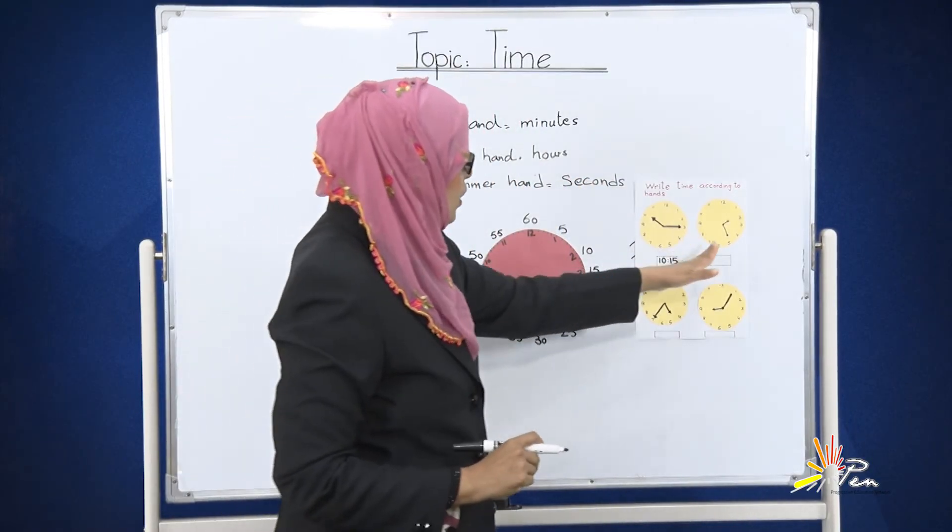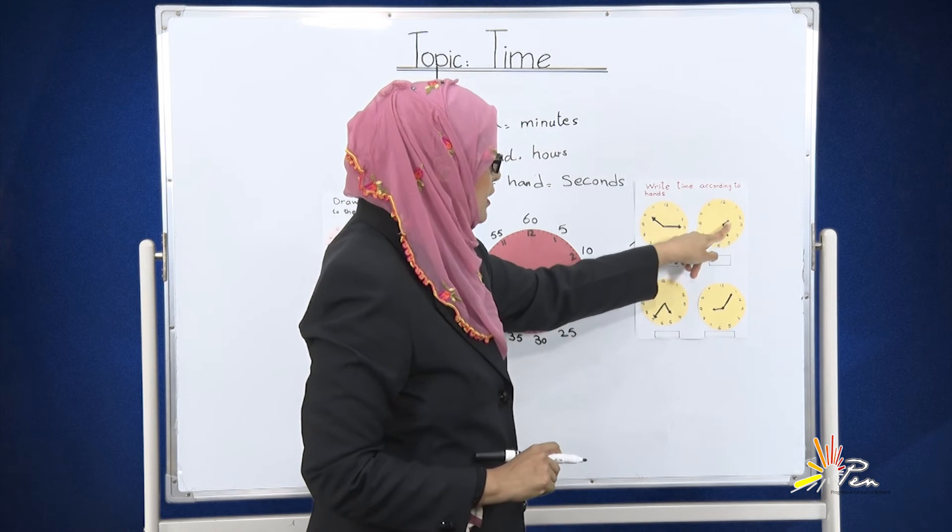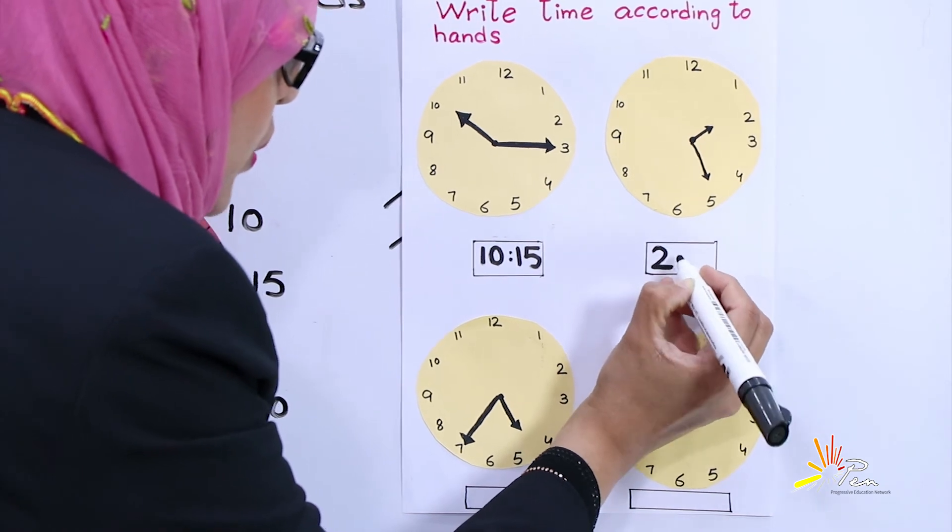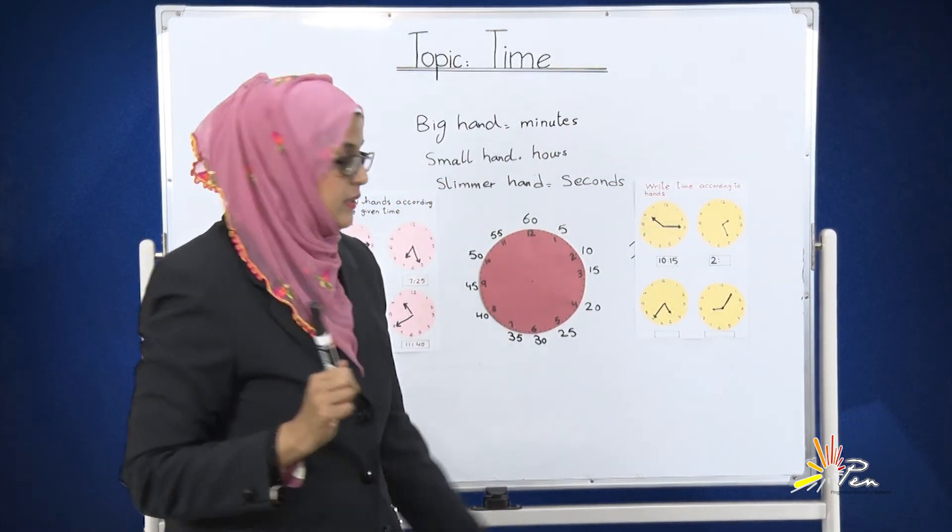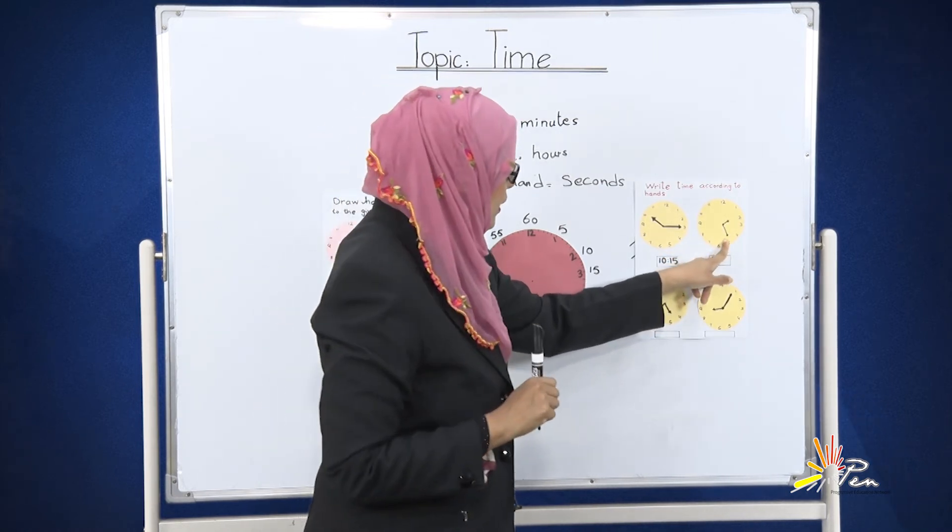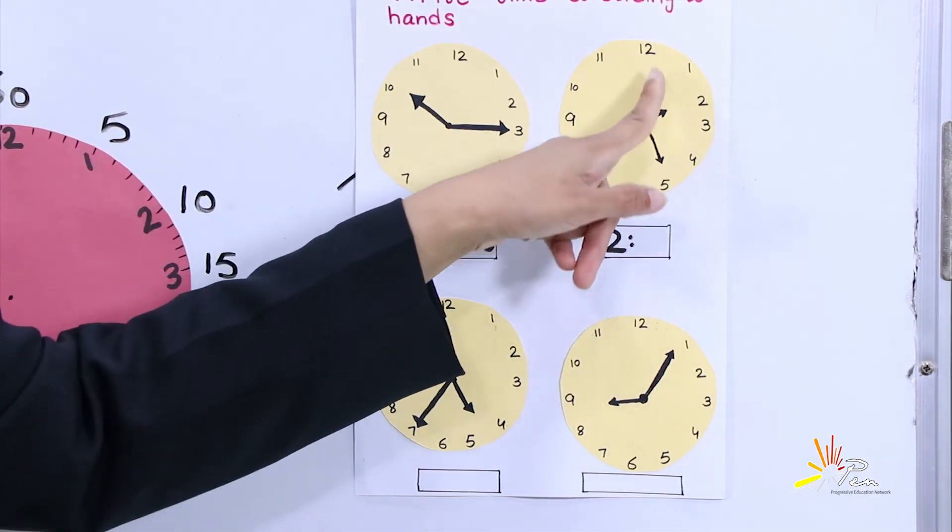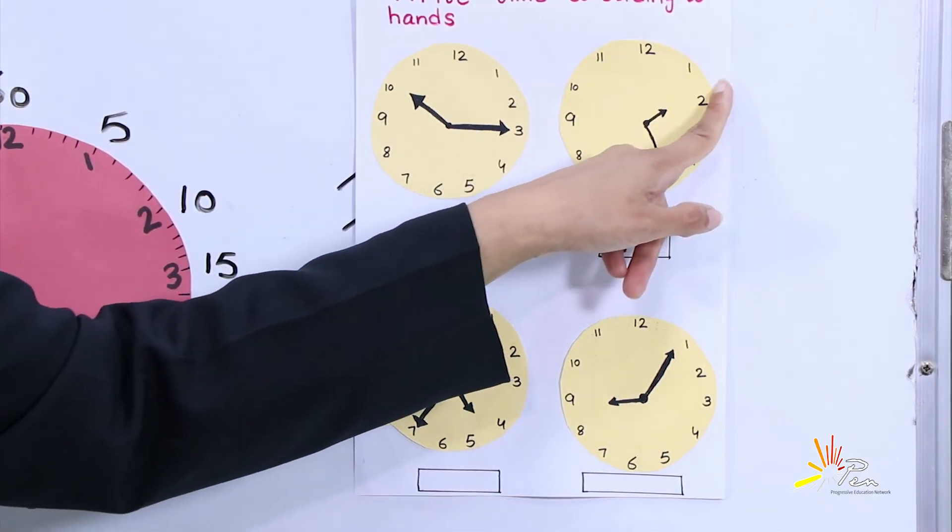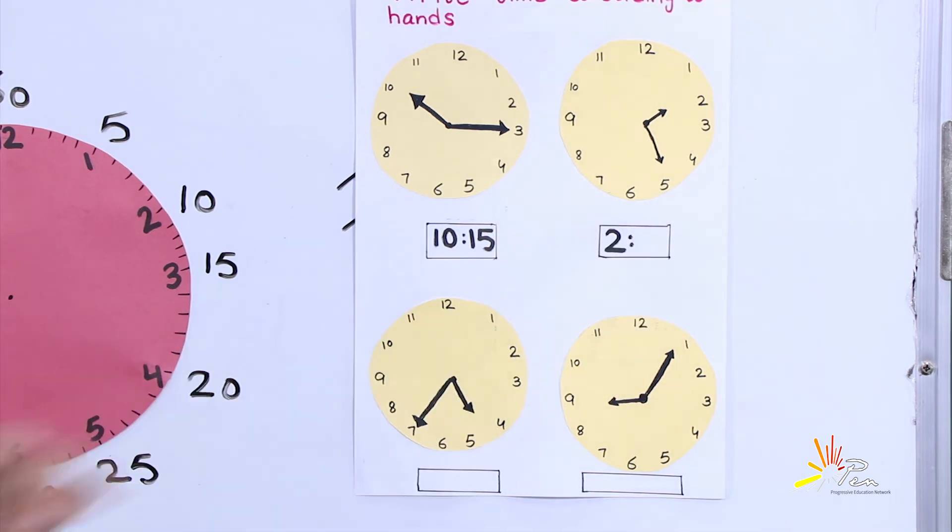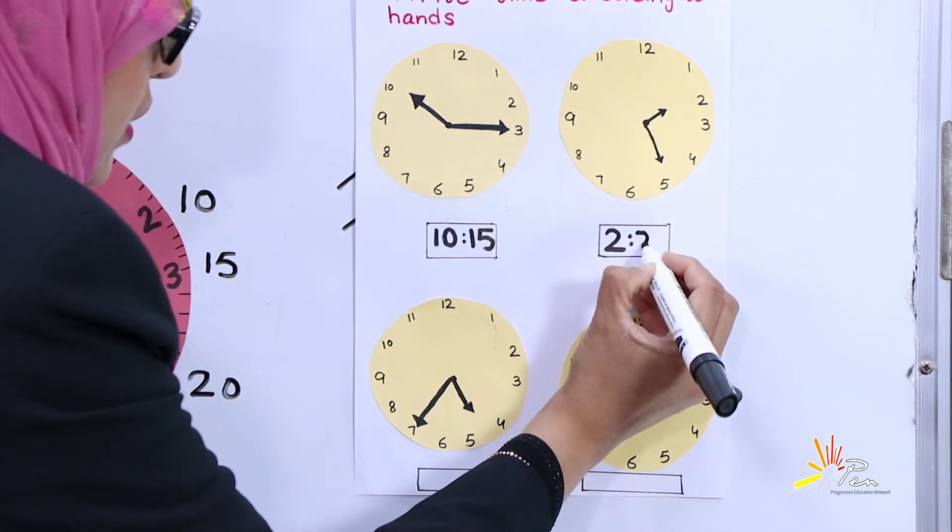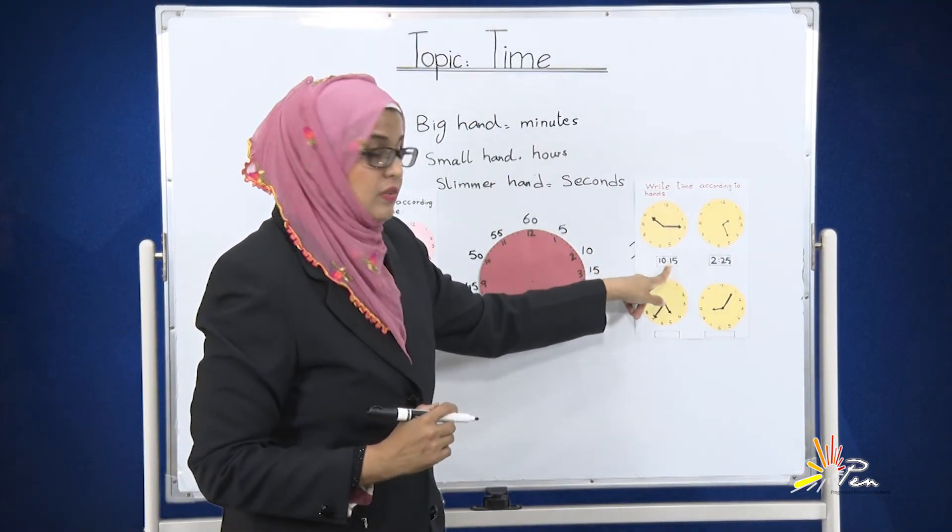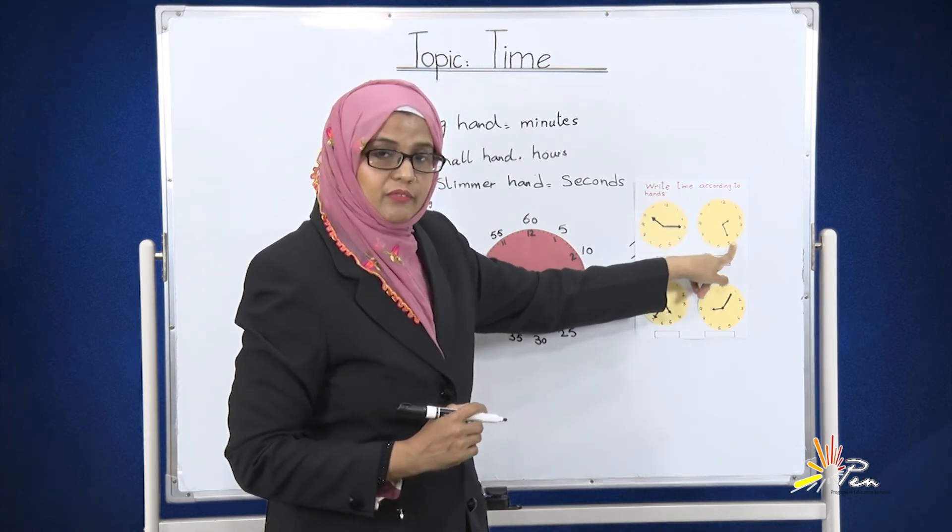Now we are observing the second clock. The smaller hand is at the number 2. We are writing here 2. And now we will see the bigger hand. The bigger hand is at the number 5. We are going to read the table of 5: 5 ones are 5, 5 twos are 10, 5 threes are 15, 5 fours are 20, and 5 fives are 25. It means there are 25 minutes: 5, 10, 15, 20, 25.